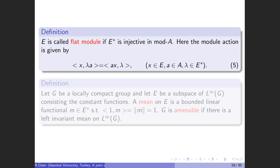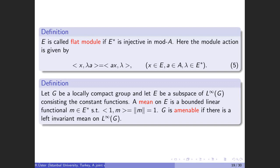Our results also depend on the amenability of the group, so I want to give the definition of amenability. Let G be a locally compact group and E be a subspace of L^infinity(G) containing the constant functions. A mean on E is a bounded linear functional with this property, and the group G is said to be amenable if there exists a left-invariant mean on L^infinity(G). Here left-invariant means L_x f m equals f m, where L_x is the translation operator and f is in E.